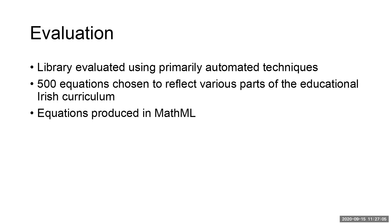The most important aspect of any development project is how we actually evaluate. For us, the evaluation was good. We chose an automated evaluation process where we took 500 equations and rendered those as MathML. The equations ranged from very simple expressions up to greater complexity, and were chosen to cover two things: the various rule sets in the UEB publications such as the technical guidelines, and relevant material gleaned from the Irish curriculum. We are very happy with the coverage in terms of equations as automated evaluations go.